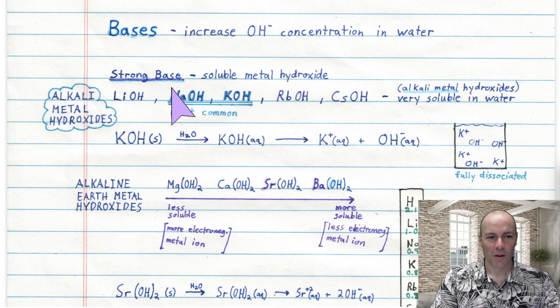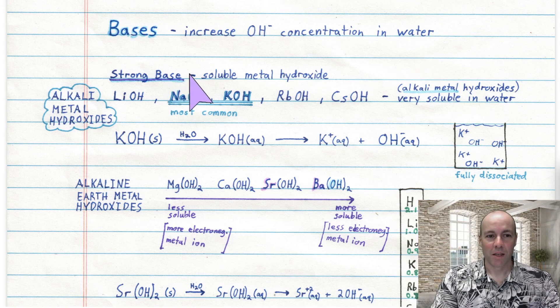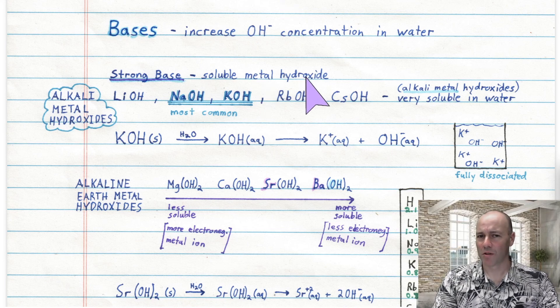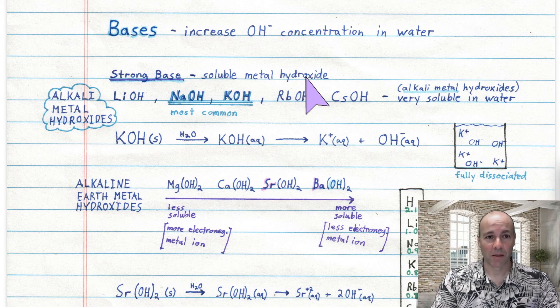A strong base is fairly easy to identify. It is a soluble metal hydroxide. Metal hydroxides are usually insoluble, but the soluble ones — we call those the strong bases.